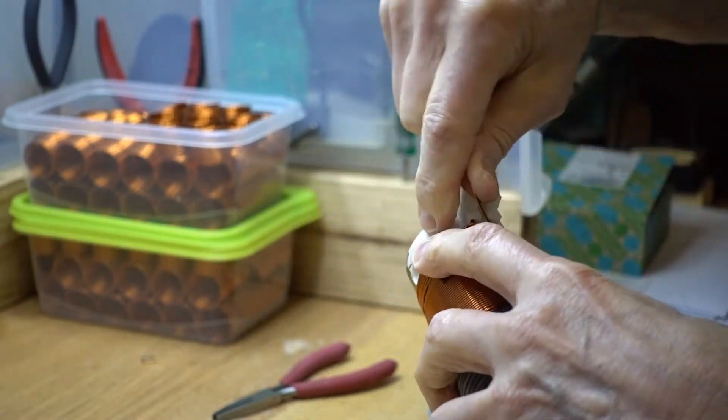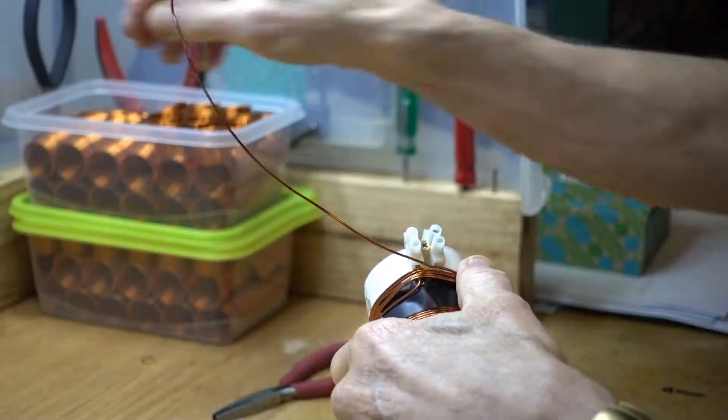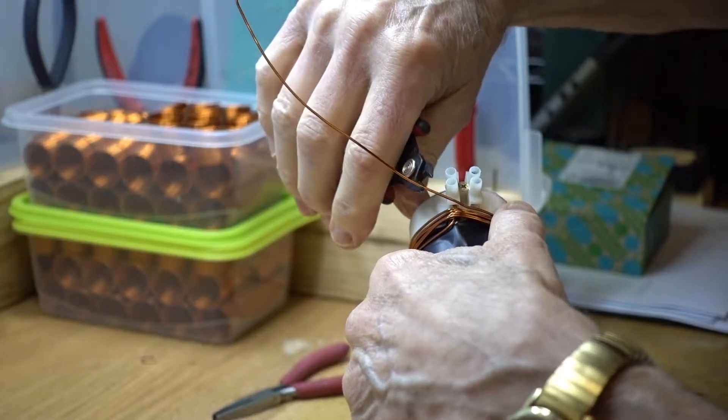After you've gotten the right number of turns on the wire, hold the wire in place and cut off the extra wire so that you have about an inch left.